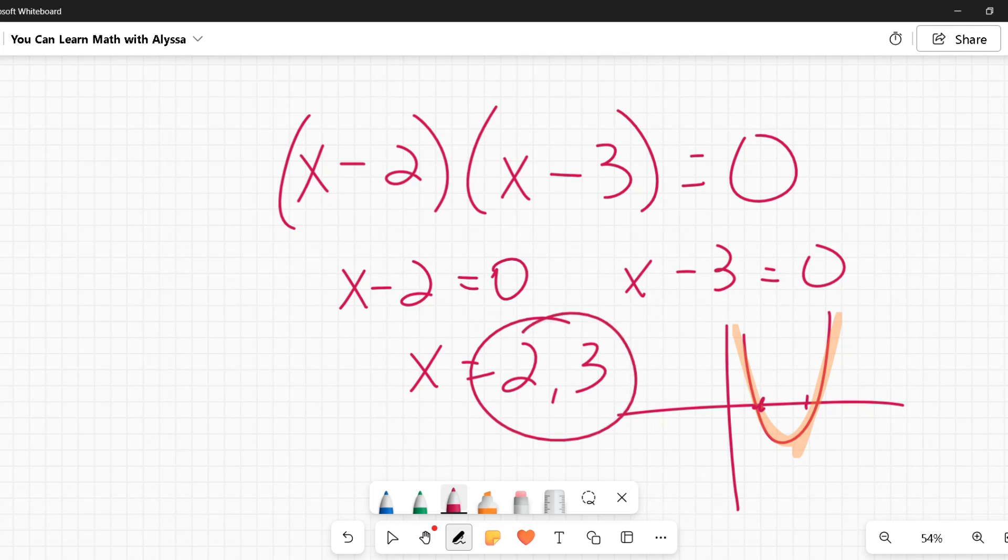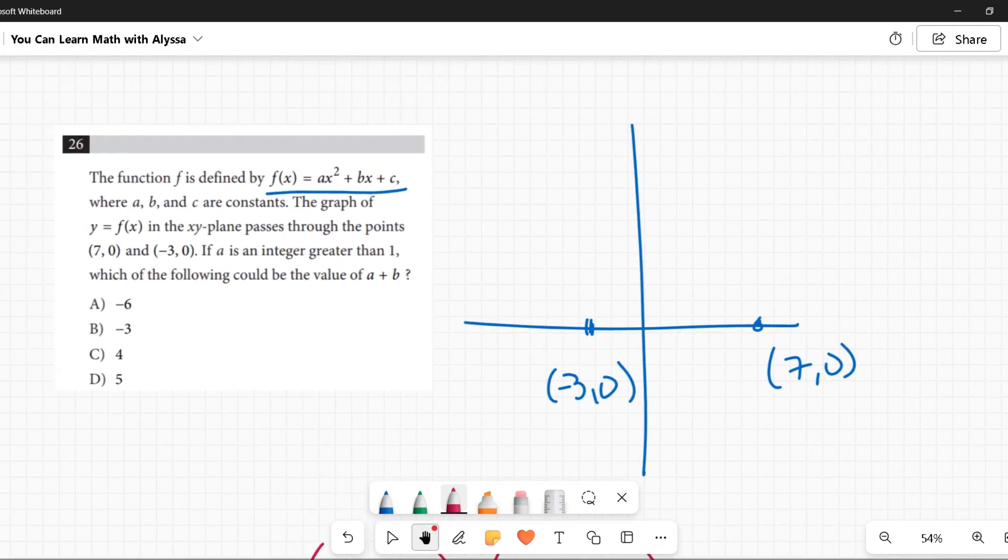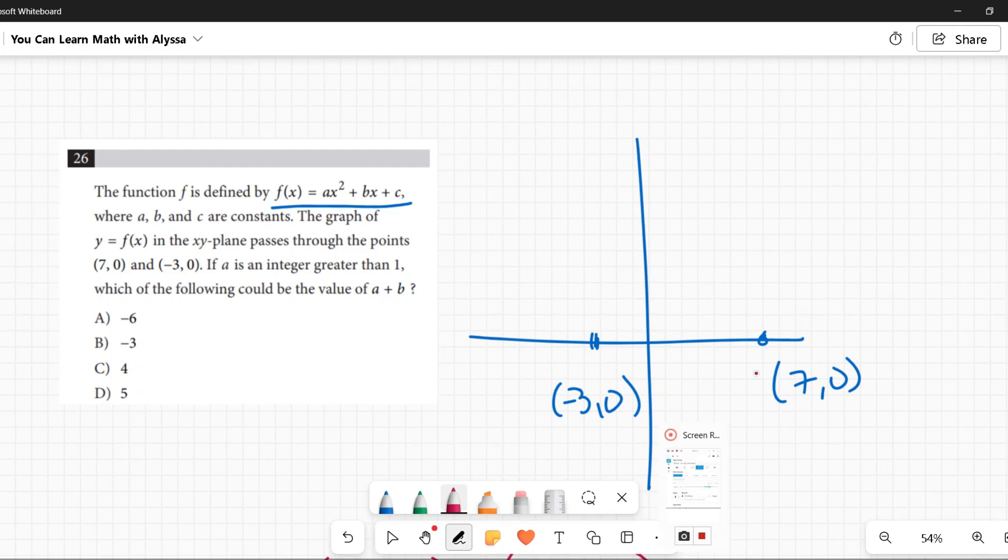If the x-intercepts of 2 and 3 came from (x - 2) and (x - 3), well here we have our x-intercepts of -3 and 7. So what would this factored thing look like?